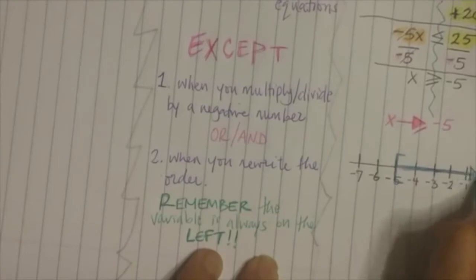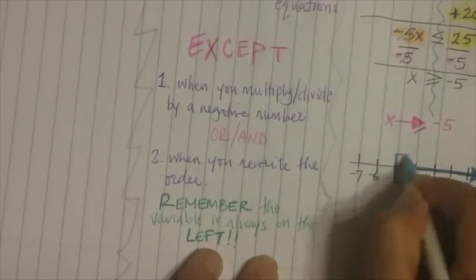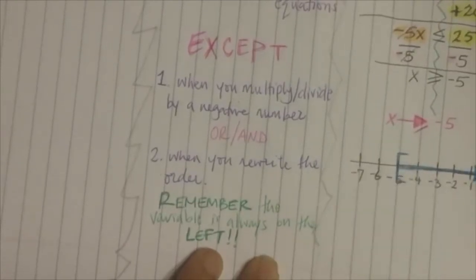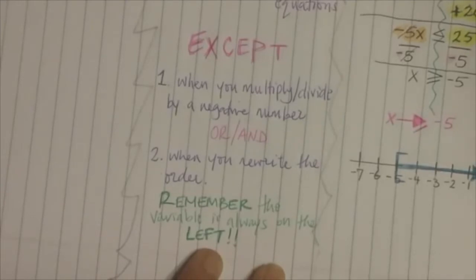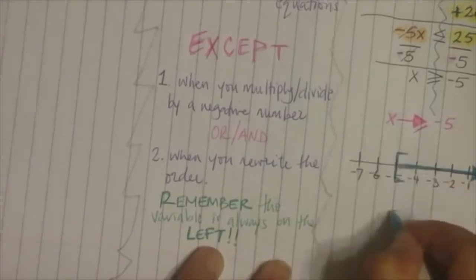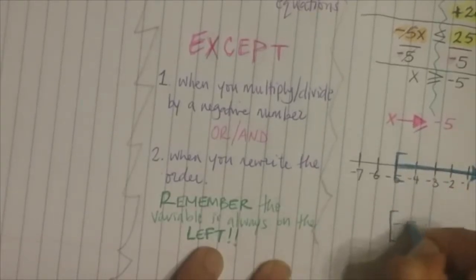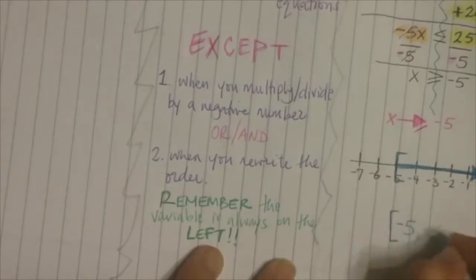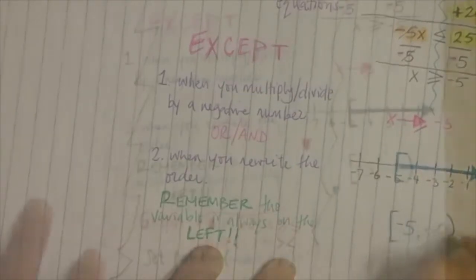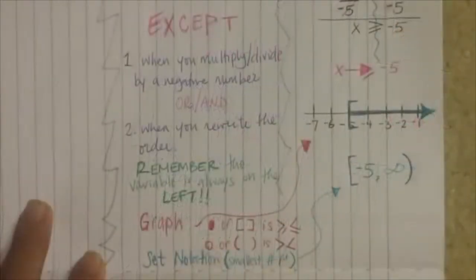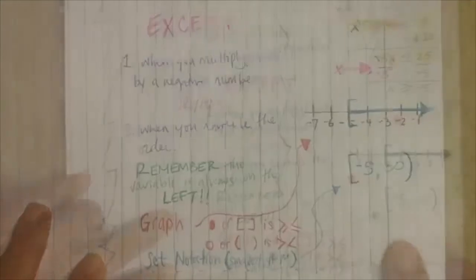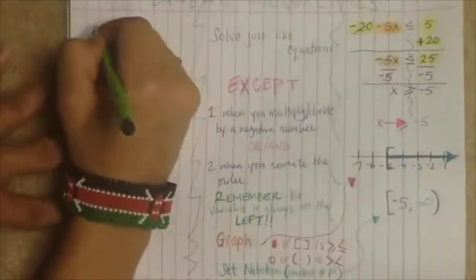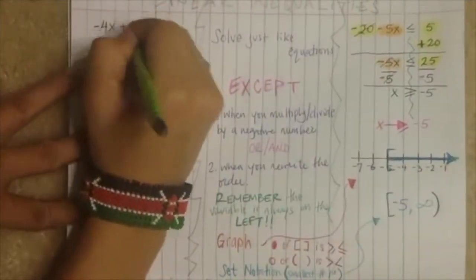The number line goes: negative 4, negative 3, negative 2, negative 1, 0, 1, 2, 3, 4, 5, to infinity. In interval notation, it's going to be a bracket, negative 5 comma infinity. Infinity does not get a bracket because it's not a number, so it gets a parenthesis.